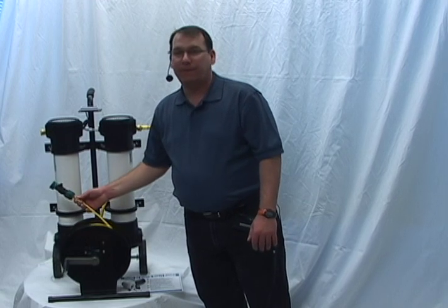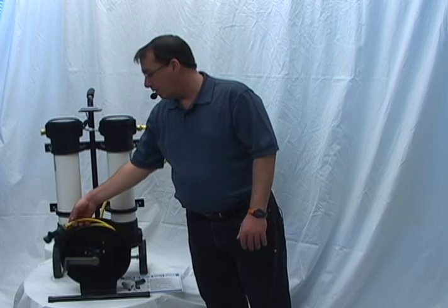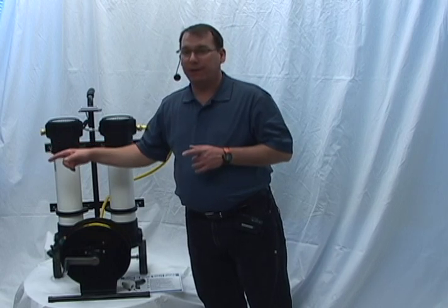This hose reel has 166 feet of pole tubing on it, so you're going to be able to cover over 300 feet of linear building.